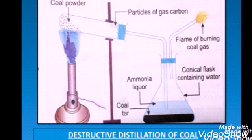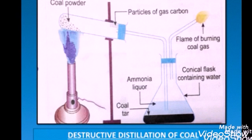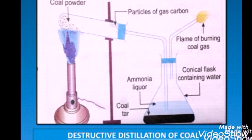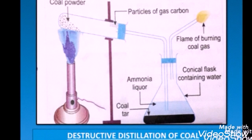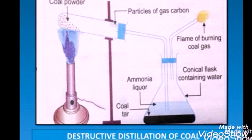When these vapours are passed through water contained in a conical flask, a large amount of this condenses to form two distinct layers. The lower layer consists of a black thick liquid called coal tar. The top clear layer contains ammonia liquor. A colourless gas bubbles out of the flask, commonly called coal gas, which burns with a yellowish flame when ignited.